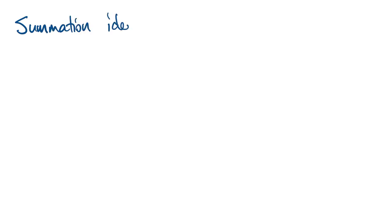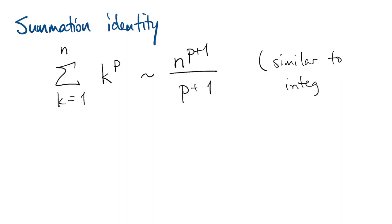The case of matrix multiplication was quite simple. In general, there's a very useful identity that we need in order to deduce these flop counts. And that is that the sum from K equals 1 to N of K to a power of P is asymptotic to N to the P plus 1 divided by P plus 1. What's great about this identity is that it's very similar to just integrating X to the P. So it's very memorable.